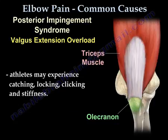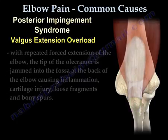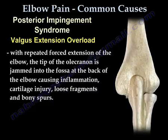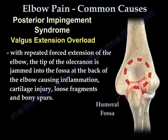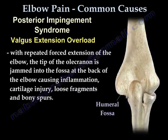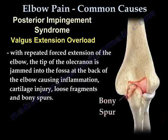The athlete may also experience catching, locking, clicking, and stiffness. With repeated forced extension, the tip of the olecranon is jammed into the fossa at the back of the elbow, causing irritation, inflammation, cartilage injury, loose fragments, and bony spurs.